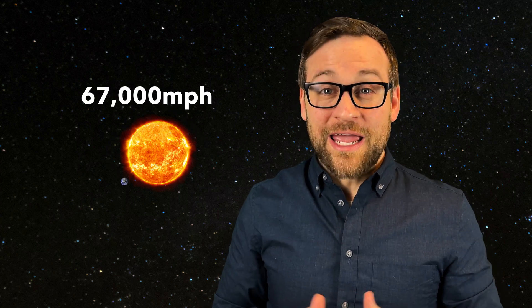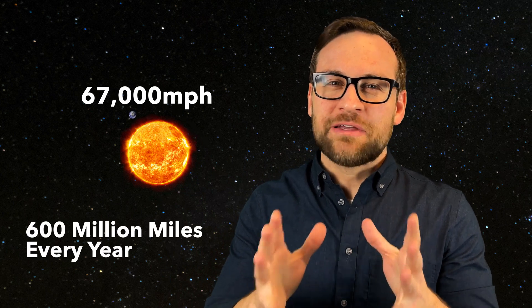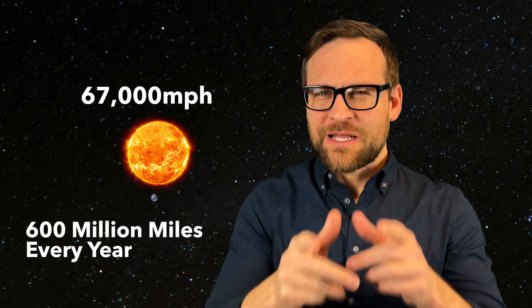Now, let's move out a little bit further. The calendar year, where we orbit the sun. It's at a speed of roughly 67,000 miles per hour, and our path around the sun means we travel 600 million miles every year. Now, let's go further out.